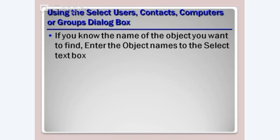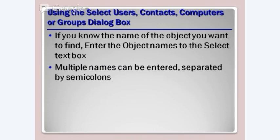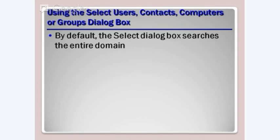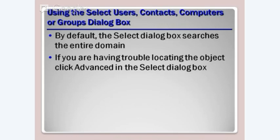For our labs we only have five or eight users so you don't have to go through all of this, but it's there. Multiple names can be separated by a semicolon — if you want to add Jay Jones and D. Butler, put a semicolon between them. Click OK, the window looks up the items listed. The Check Names button converts each name to a link. By default, the dialog box searches the entire domain, but you can search within a container or organizational unit. If you're having trouble, click the Advanced Find Now button — it will list everything alphabetically.